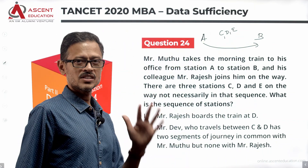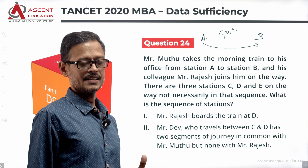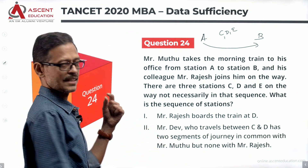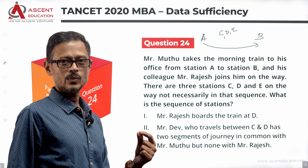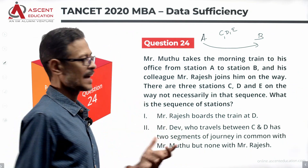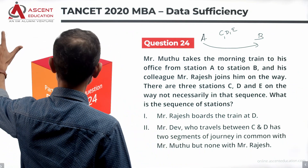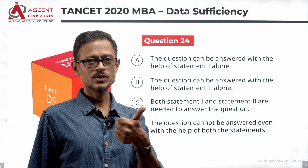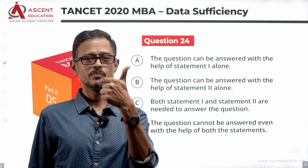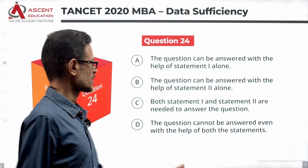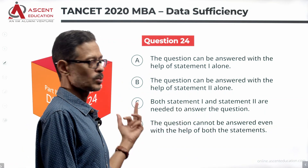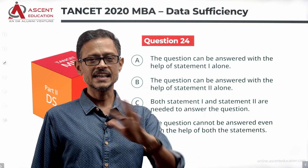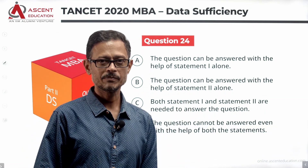What is the sequence of the stations? Let's look at the statements. Answer option A: statement one alone is sufficient. Answer option B: statement two alone is sufficient. Answer option C: statements one and two together are sufficient. Answer option D: data is insufficient.